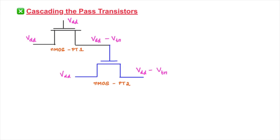Let us recap the N-MOS pass transistor and why N-MOS is not capable of passing a strong one. Instead of passing a strong one, it passes a weak one, which is represented by VDD minus Vtn. To recollect this, you can watch the video link shared in the description box, which explains why N-MOS cannot pass a strong one and why P-MOS is capable of passing a strong one.